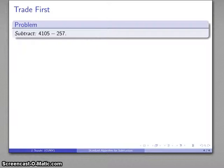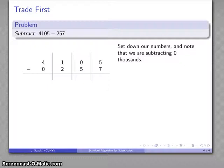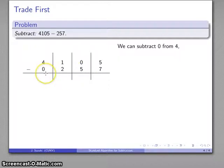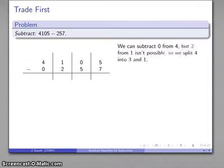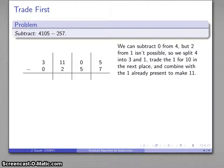Now, let's take a look at another example. 4,105 minus 257. So I'll set down the number. And, again, it's convenient to remember we're actually subtracting 0 thousands. So 0 thousands from 4 thousands, not a problem. But 2 hundreds from 1 hundred can't do that. So I'm going to split this 4 into a 3 and a 1. I'll trade it, trade the 1 for 10 in the next place over. There it goes. And I'll consolidate those 2. I get an 11. And 2 from 11, not a problem.